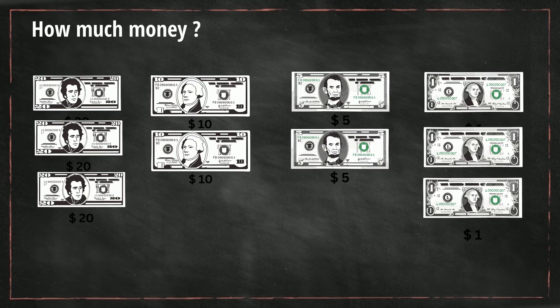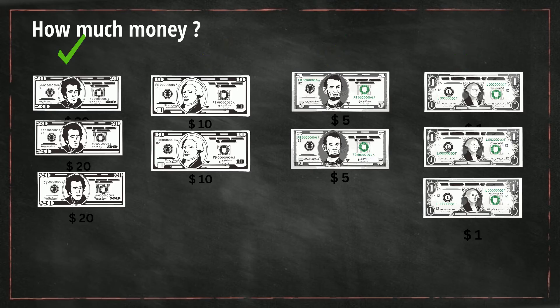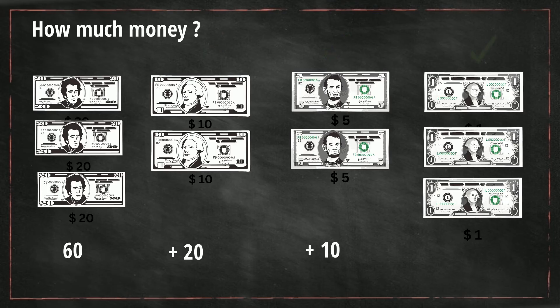Now with this example, we have three twenties, two tens, two fives, and three one dollar bills. When we total the twenties: 20, 40, 60. Then we have two tens: 10, 20. Then we have two fives: 5, 10. And then three ones: 1, 2, 3. When we total this together, it equals $93.